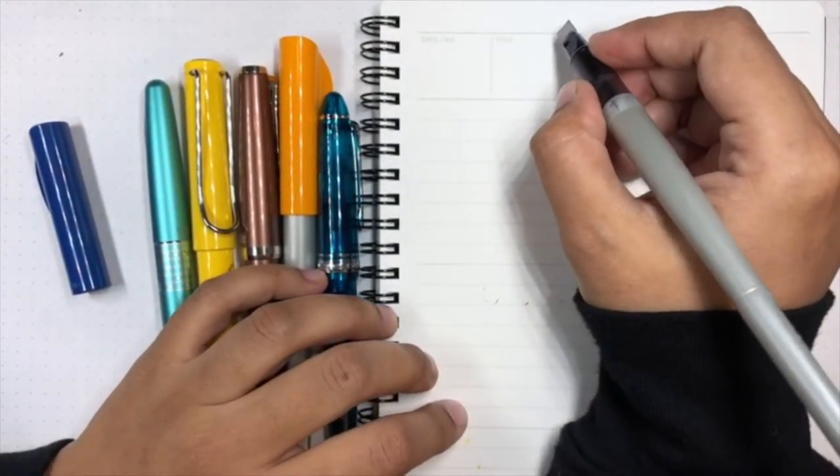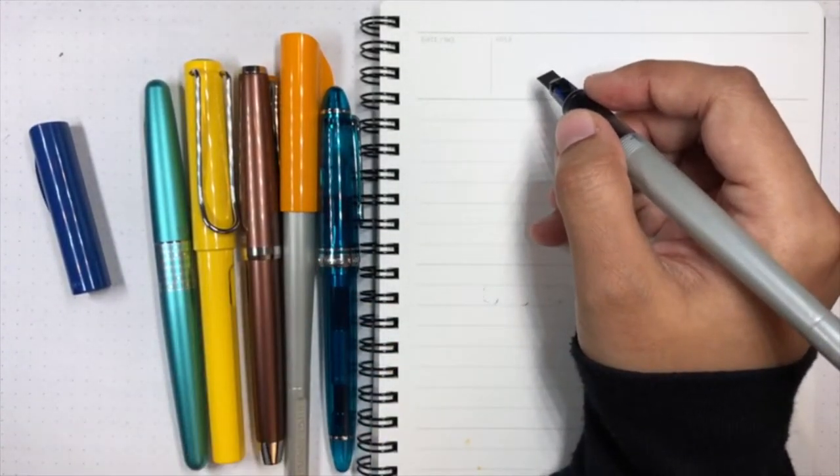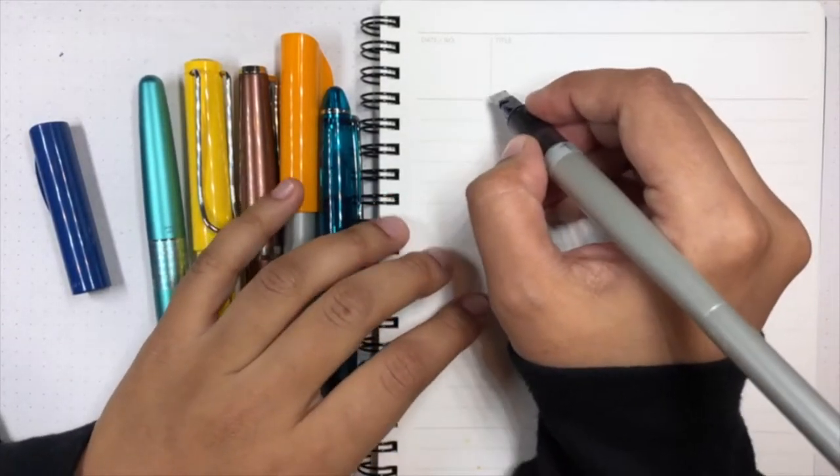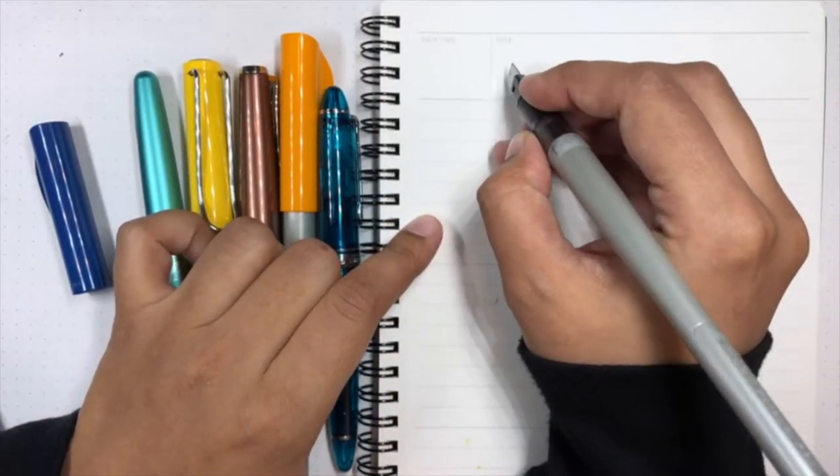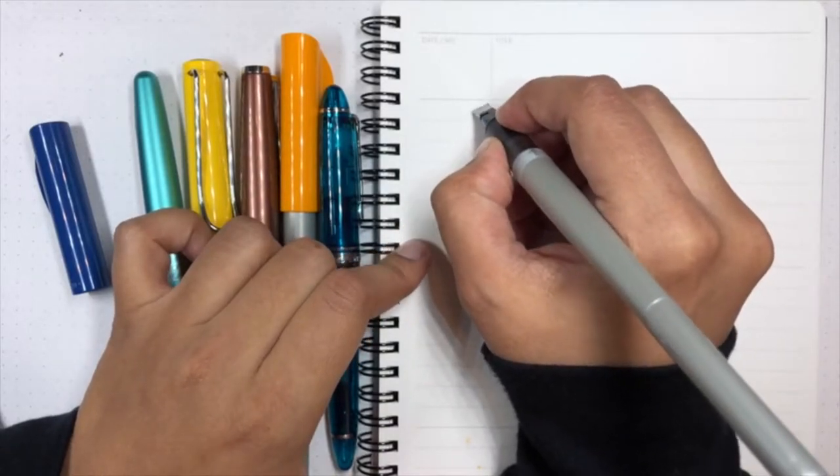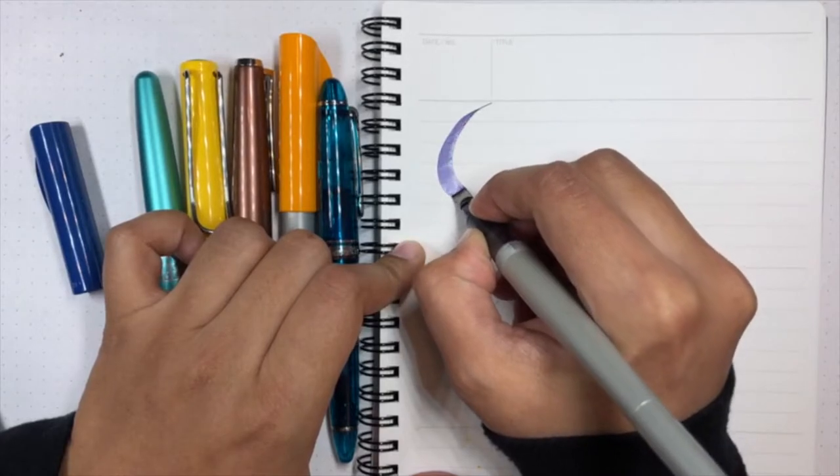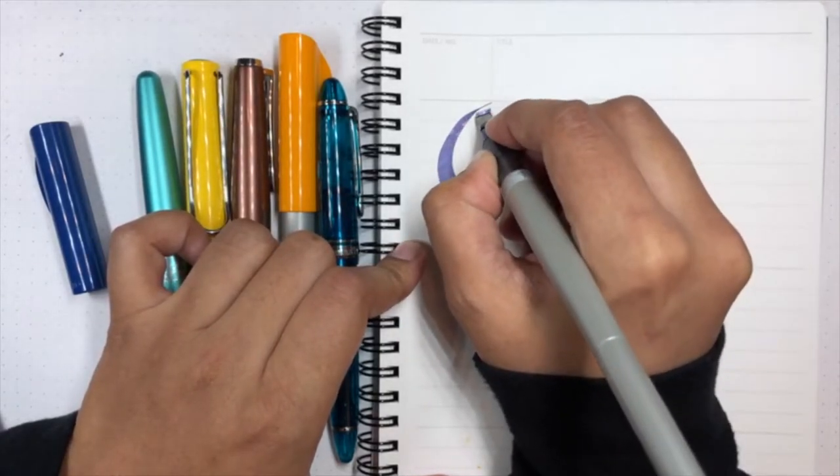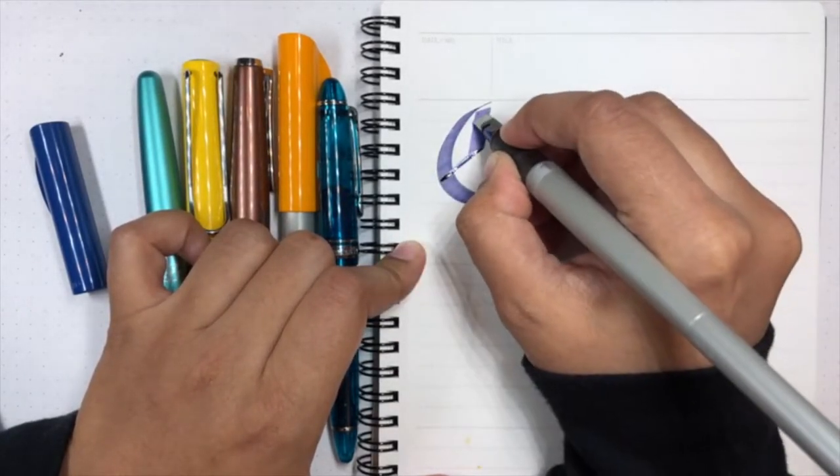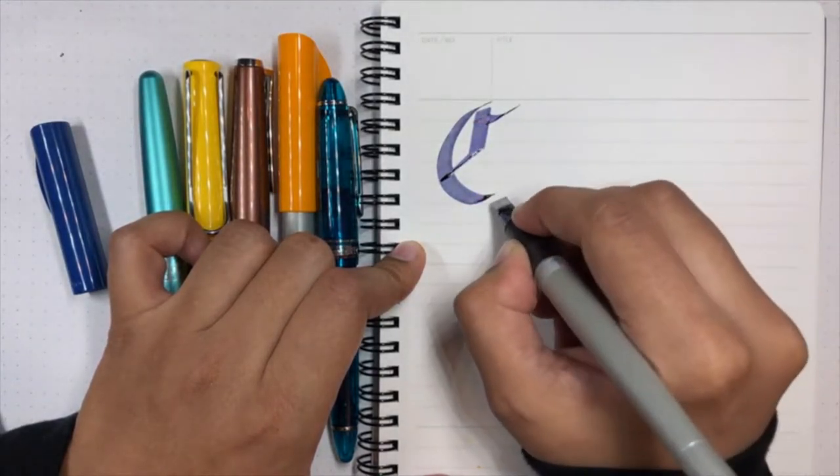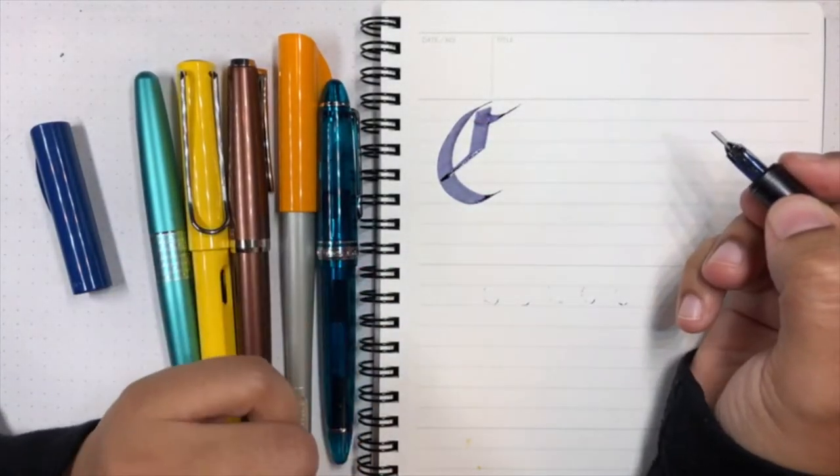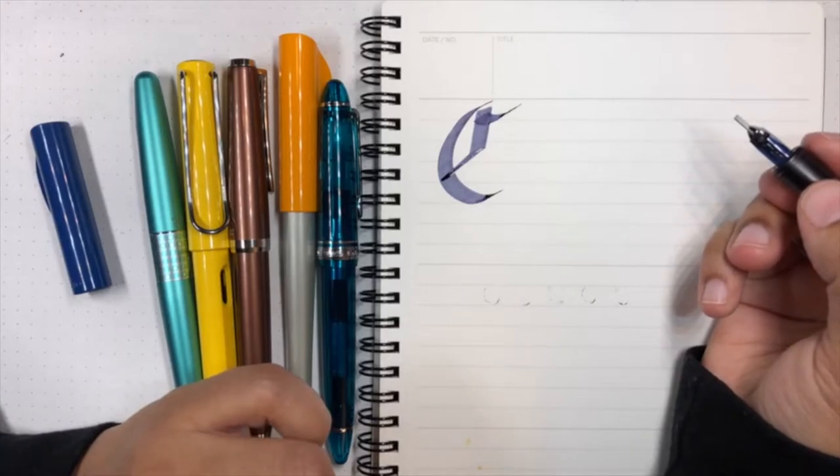So anyway, enough of my rambling. Let's get to the letter C. First thing is we're gonna do the letter C with my Pilot Parallel. Let's see if I can actually get this one right. Oh yeah, that actually came up not too bad. I've done worse, but I've done better.